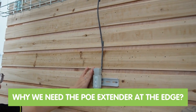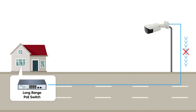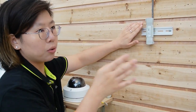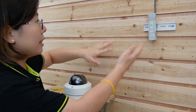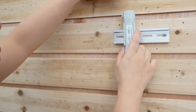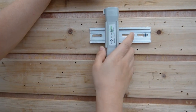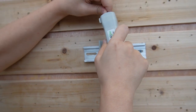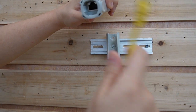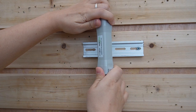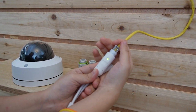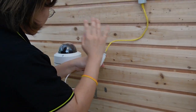At the edge, we need a PoE extender. The reason is that this IP camera is just an ordinary IP camera — in a long-range setup, it cannot send back the data and signal on its own, so we need a PoE extender here to send the data back to the switch. We connect the PoE extender's input to the long cable, then use another short patch cord from the output port to connect to the IP camera at the edge. As you can see, the indicator light is already on — the camera is getting power and data at the same time through this single Ethernet cable.